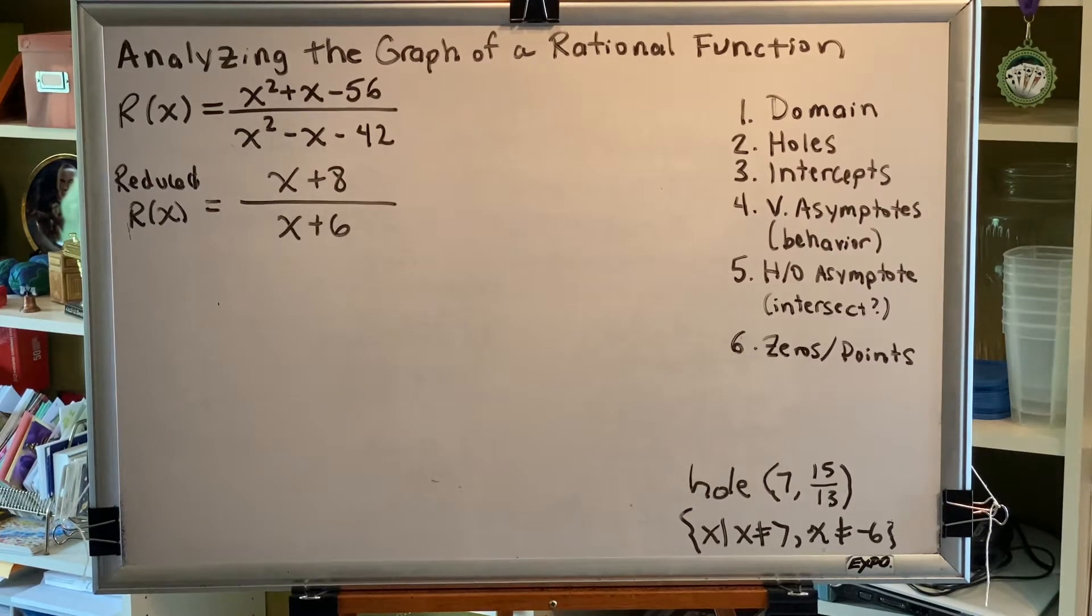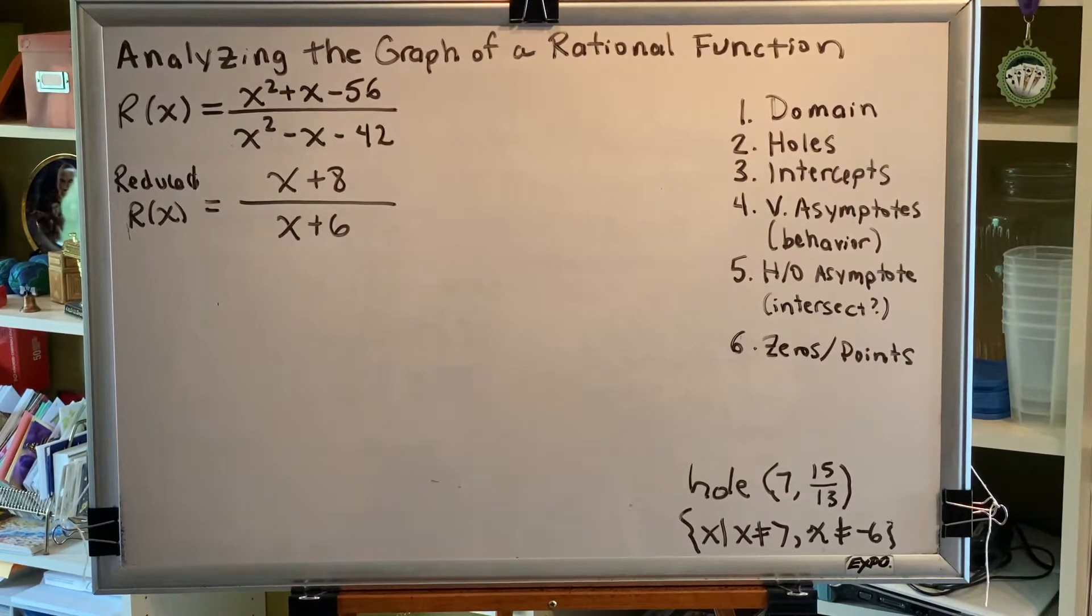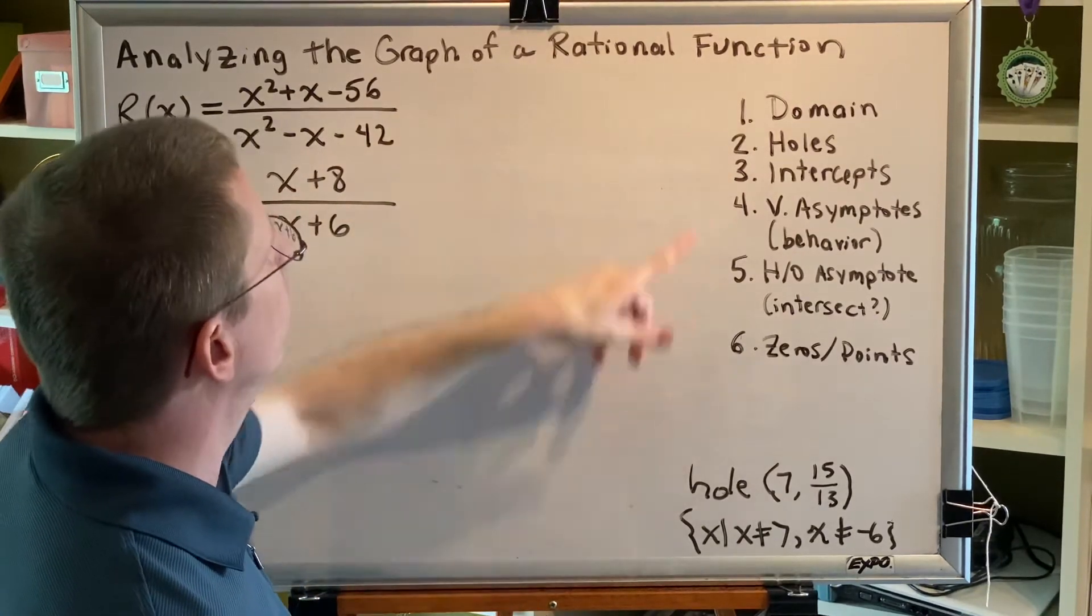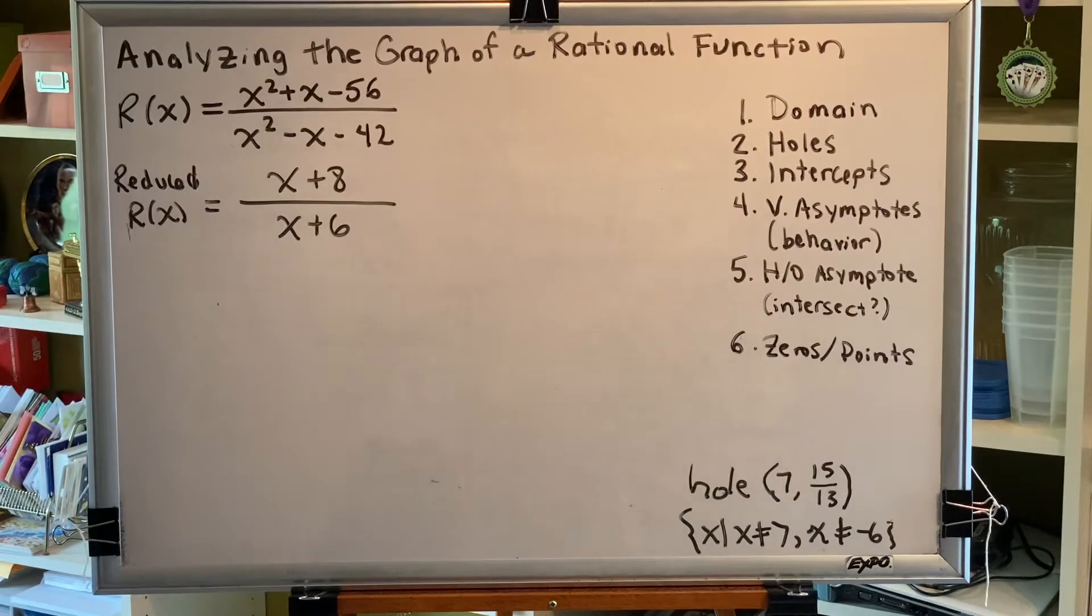The topic of this video is analyzing the graph of a rational function. This is a continuation of the previous video. We've already completed steps 1 and 2. We found our domain and we found that our graph has a single hole. We're now ready to move on to step 3, finding intercepts.